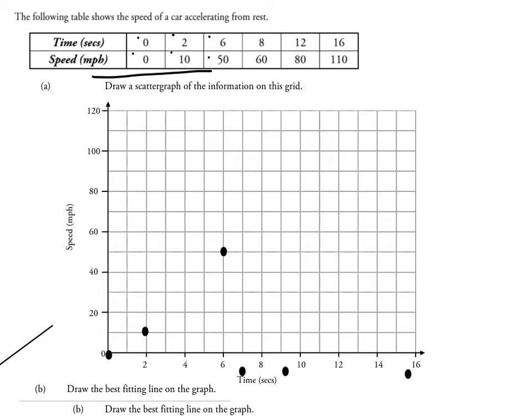The next one is 8 and 60, so we go along, 2, 4, 6, 8, 8 seconds, and then up to 60 miles an hour. That one's a bit nicer, that one's actually marked for us.